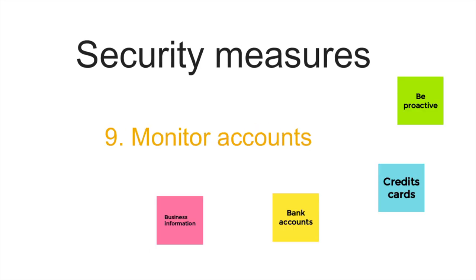Step number nine: monitor your accounts. Keep monitoring your accounts and this is going to help you spot any suspicious activity immediately when they happen. When you regularly monitor your accounts, keep an eye out for any activity in your accounts or systems — credit cards, bank accounts and any other financial data — and this is going to be very important.